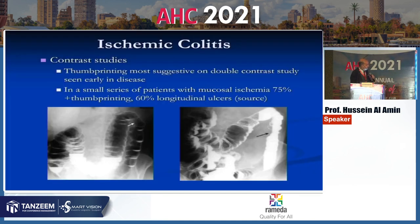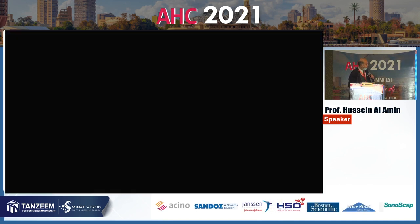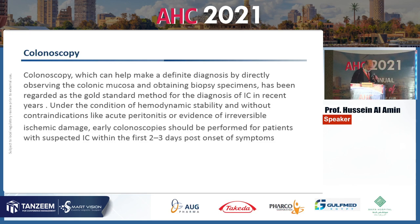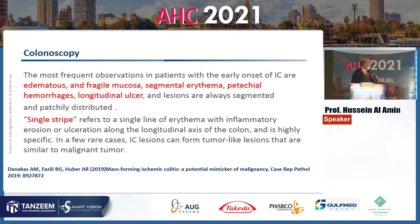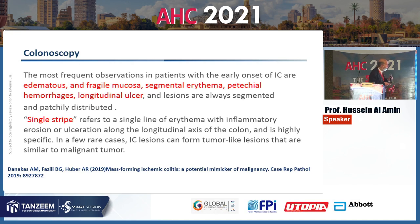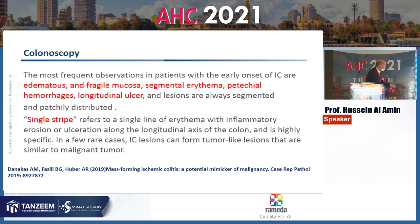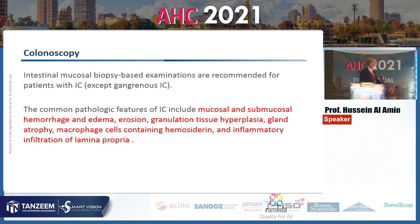Colonoscopy is the gold standard for diagnosis and can be done within 48 hours of the onset of ischemia. The most frequent findings include edematous and fragile mucosa, segmental erythema, petechial hemorrhage, and ulceration. The single stripe sign — a longitudinal ulceration along the longitudinal axis of the colon — is rather specific but rare and carries a better prognosis than circumferential ulceration.